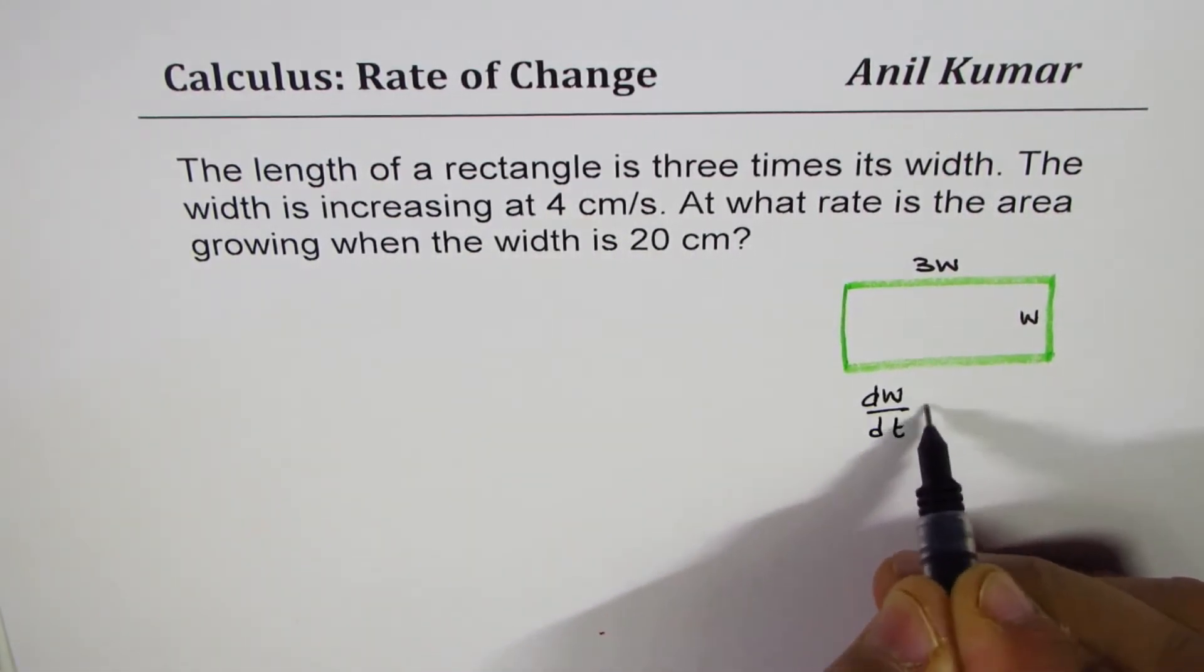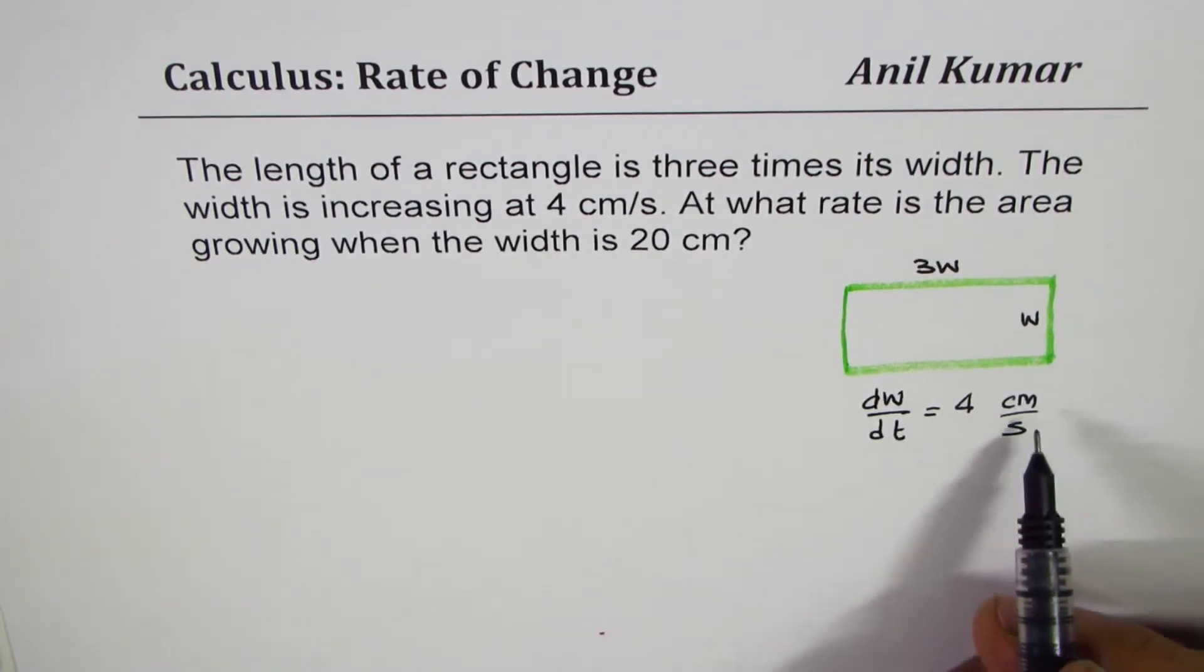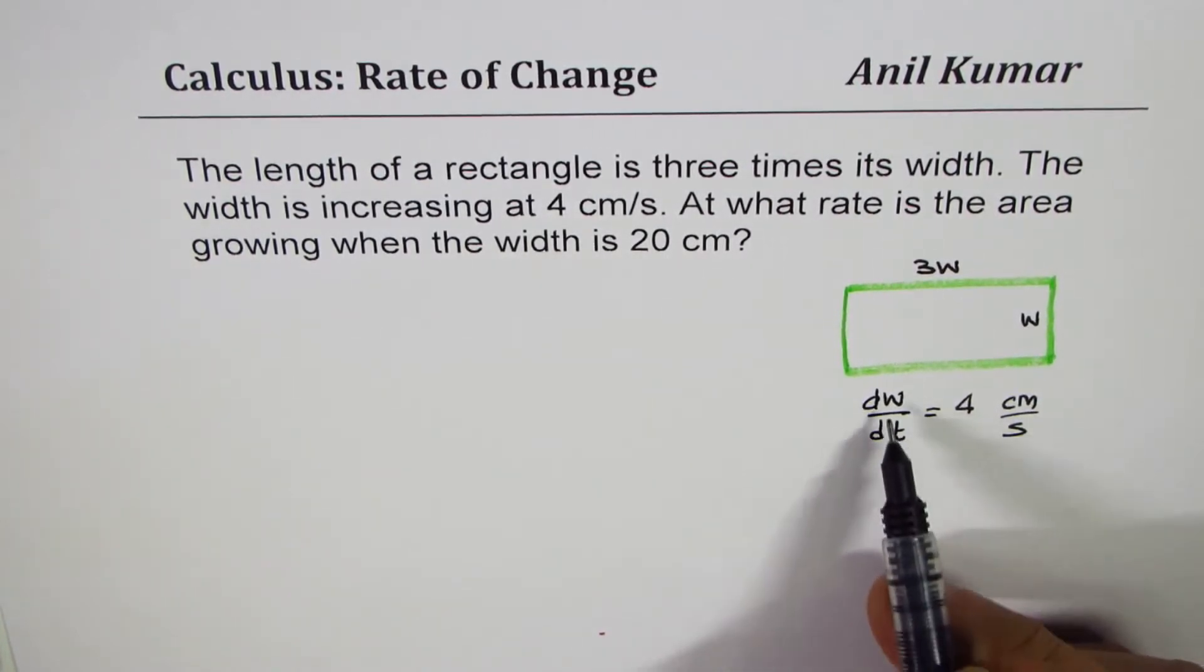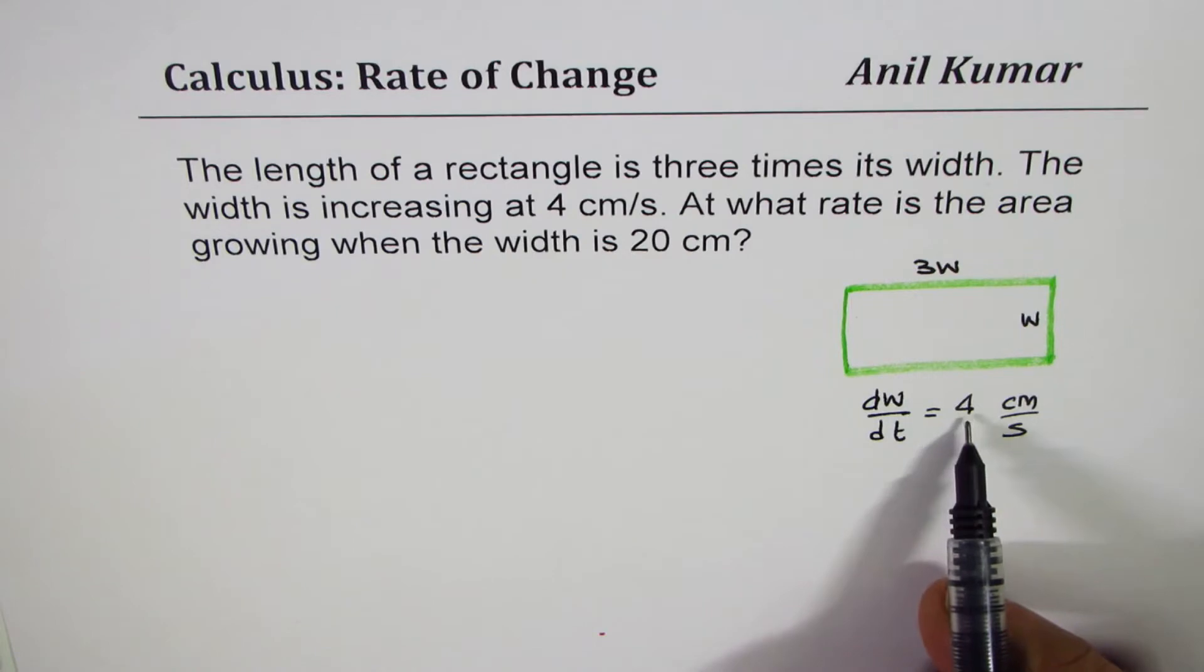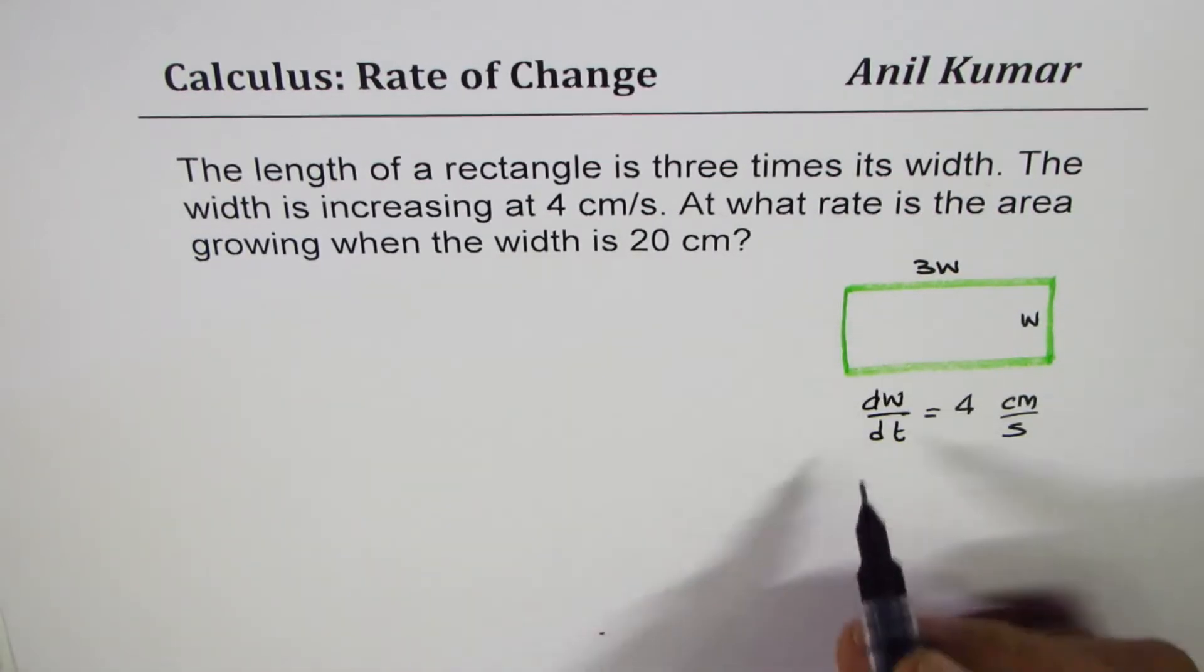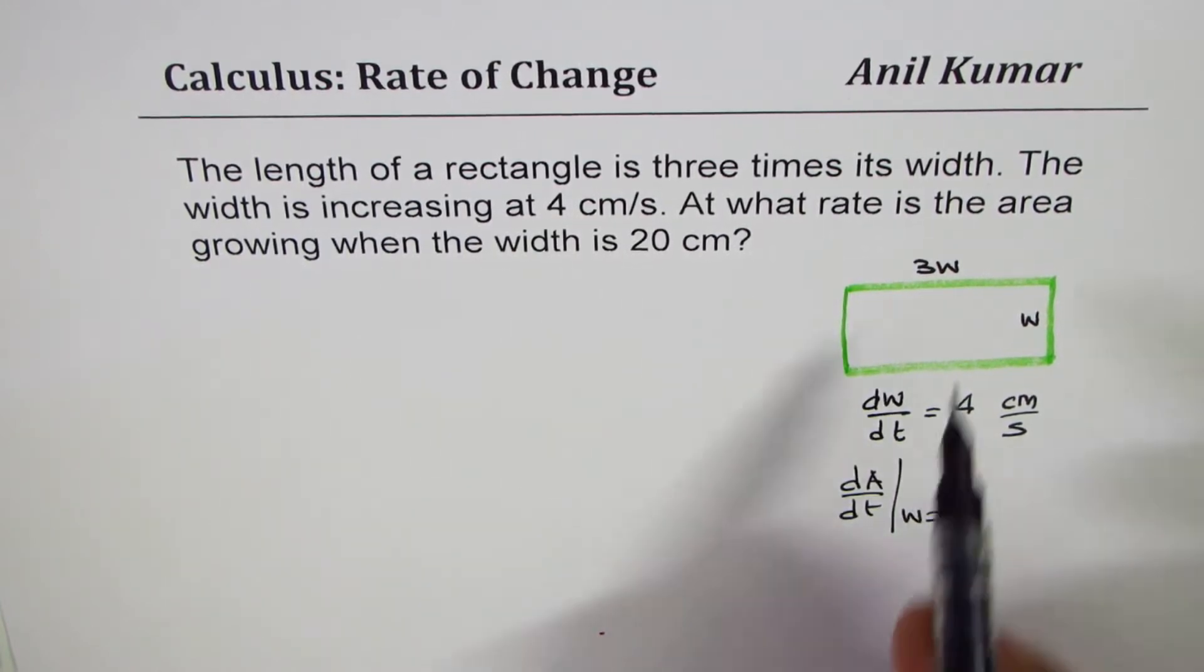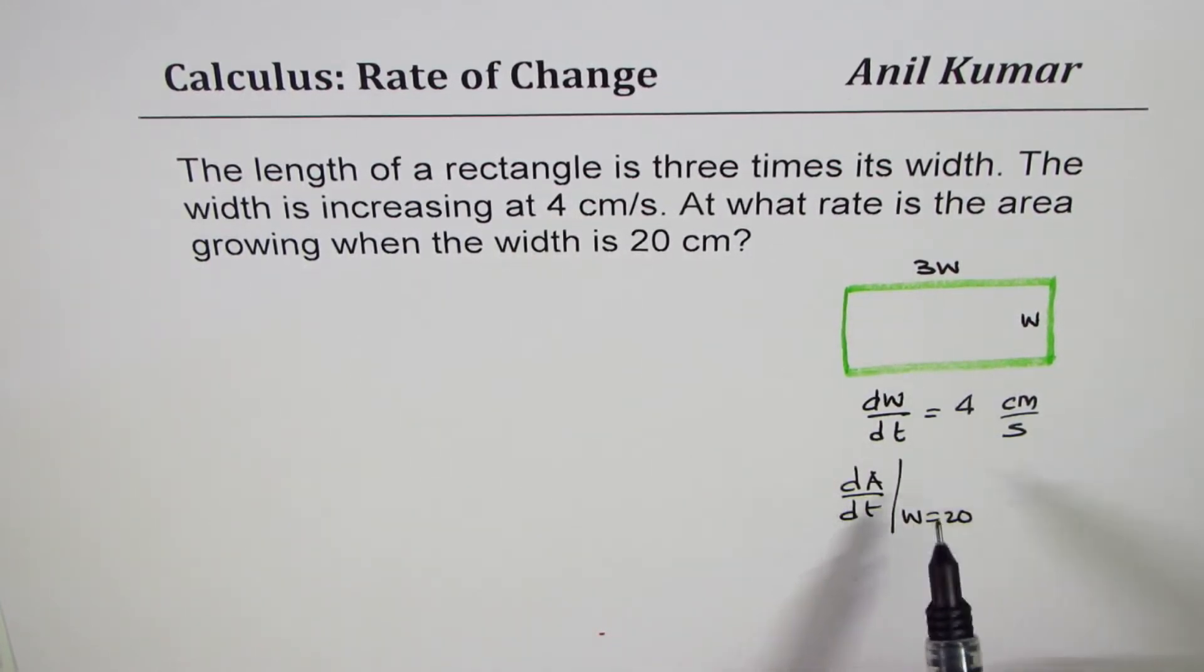The width is increasing at four centimeters per second, meaning dW/dt equals 4 cm/s. The units tell you what it represents: centimeters for width and seconds for time. We need to find the rate at which area is growing when the width is 20. That means I have to relate area with width.